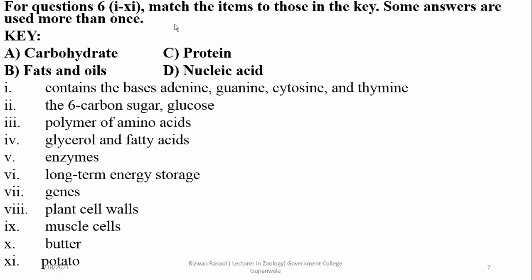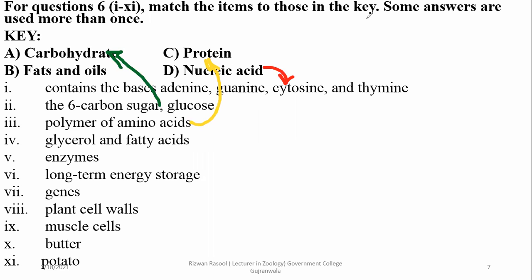Question 6: Match items to those in the key — some answers used more than once, four options. Which contains the bases adenine, guanine, cytosine, and thymine? That will be nucleic acids. A 6-carbon sugar glucose is obviously a carbohydrate. Glycerol and fatty acid are found in lipids — fats and oils.